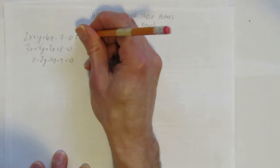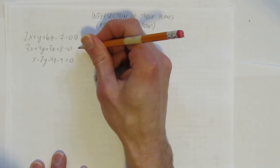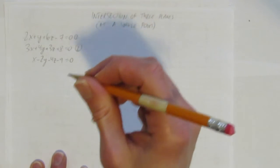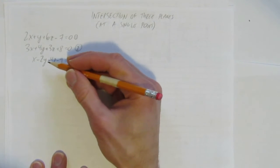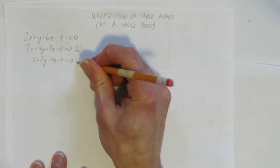In this video, we're going to look at the intersection of three planes where they intersect in a single point. So first I'll read the equations. The first is 2x + y + 6z - 7 = 0. Let's call that equation 1. The second is 3x + 4y + 3z + 8 = 0. Call that equation 2. Finally, x - 2y - 4z - 9 = 0. We'll call that equation 3.